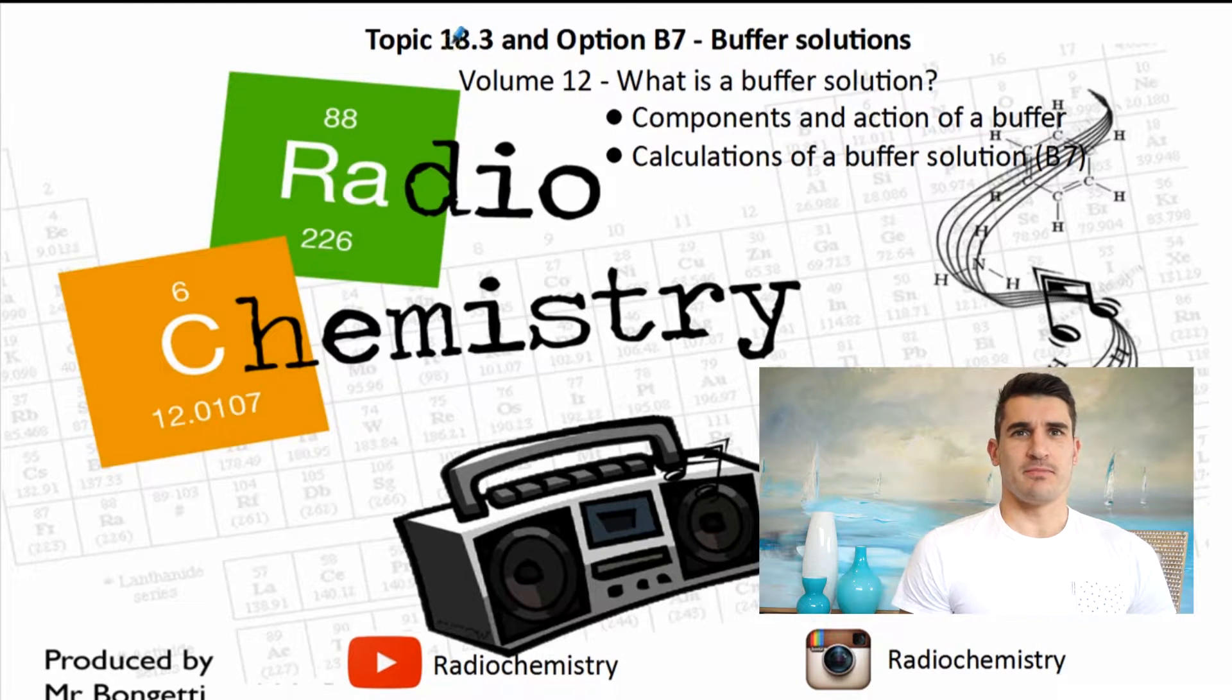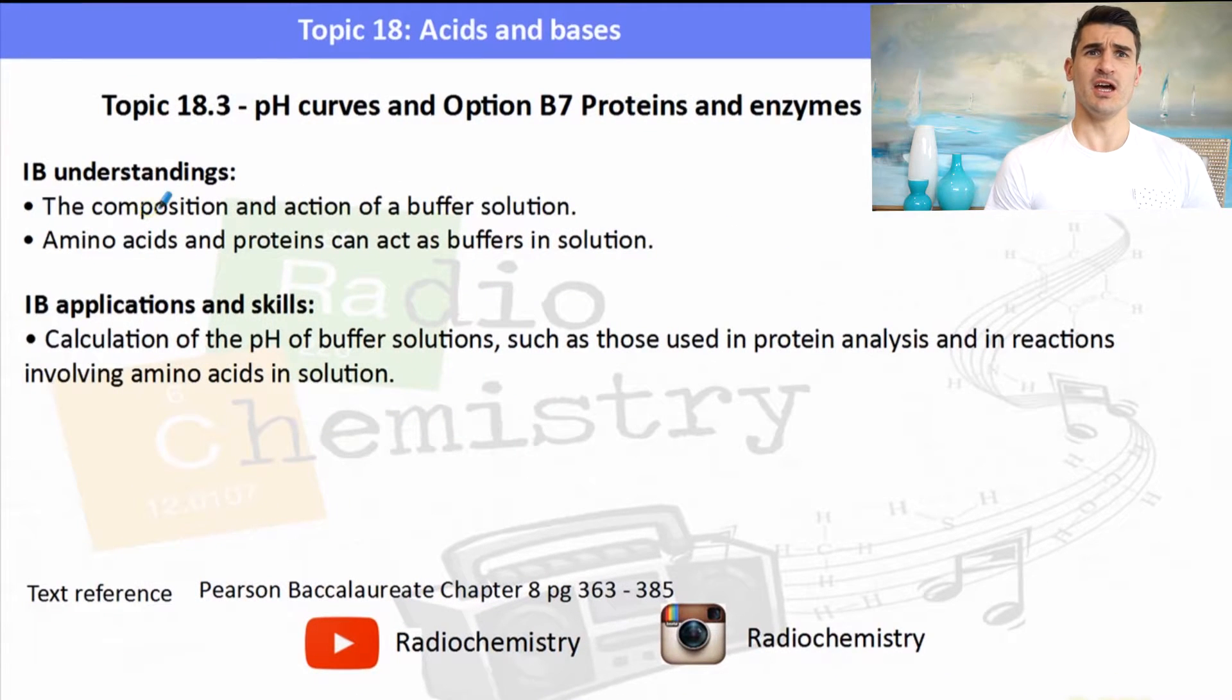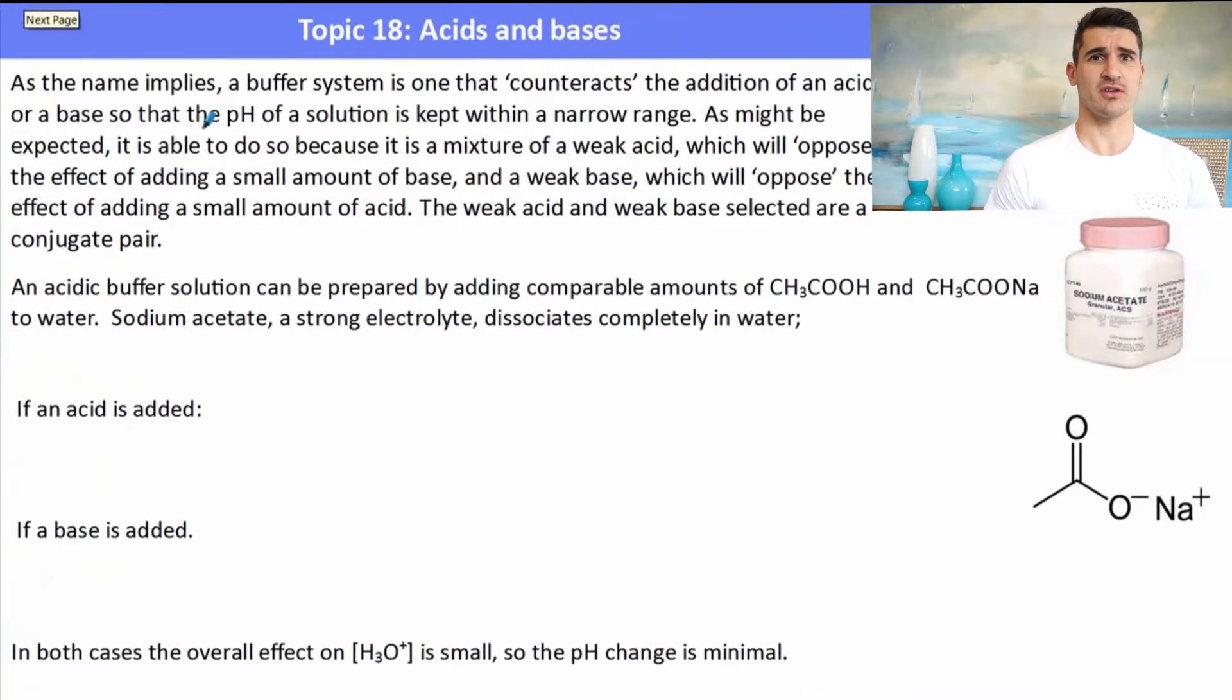So topic 18.3 and B7, this is actually volume 11. We look at the components and action of a buffer and then we look at some calculations of a buffer solution. For 18.3, you need to know the composition and action of a buffer. For B7, you need to know about amino acids acting as buffers and pH buffer calculations.